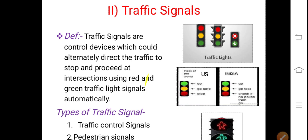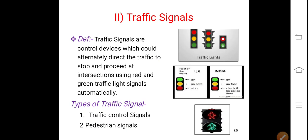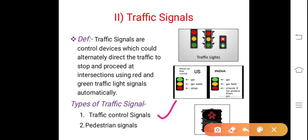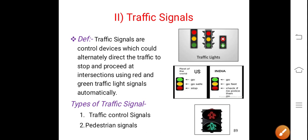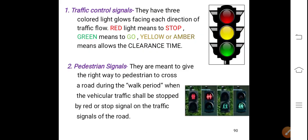Types of traffic signals: traffic control signals and pedestrian signals. Traffic control signals use the standard red, green, and amber lights. For pedestrian signals, when the red light comes along with the image of a human being, you have to stop — you should not cross even though there is a zebra crossing, because vehicles are crossing at that point. As soon as you get the green light with the image of the human being, pedestrians are allowed to move on the zebra crossing safely.